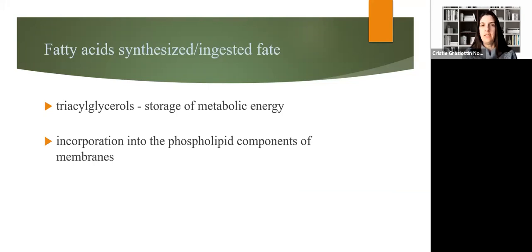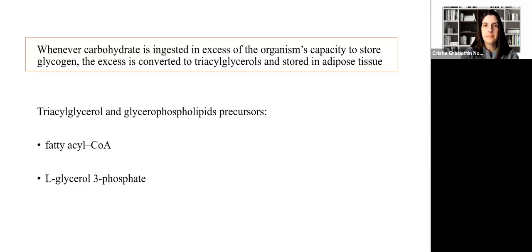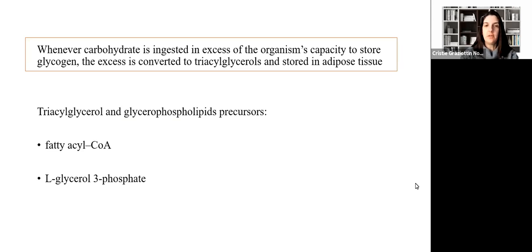In our last class, we talked about fatty acid synthesis, and today we're going to talk about what happens once these fatty acids are synthesized. They can be used to produce triacylglycerol that will be stored as an energy source when needed. They can also be incorporated into phospholipids, which are components of our membranes. Whenever carbohydrates are ingested in excess of the organ's capacity to store glycogen, the excess is converted to triacylglycerol and stored in adipose tissue. To synthesize triacylglycerol and glycerophospholipids, we need the precursors: fatty acyl-CoA and glycerol-3-phosphate.